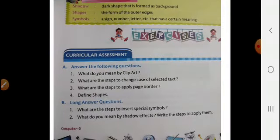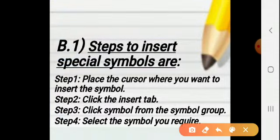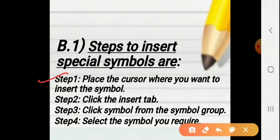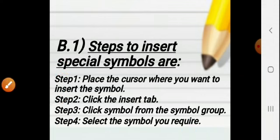Part B, Question 1: What are the steps to insert special symbols? The steps to insert special symbols are: Step 1 - place the cursor where you want to insert the symbol. Step 2 - click the Insert tab. Step 3 - click Symbol from the Symbol group. Step 4 - select the symbol you require. So there are simply four steps in this answer. You can pause the video to complete your work.